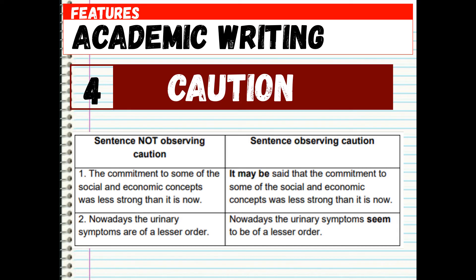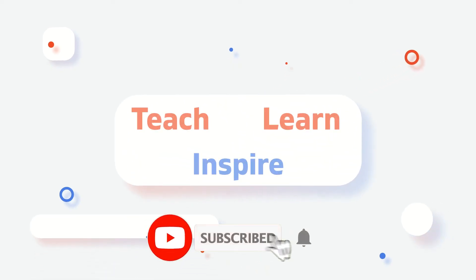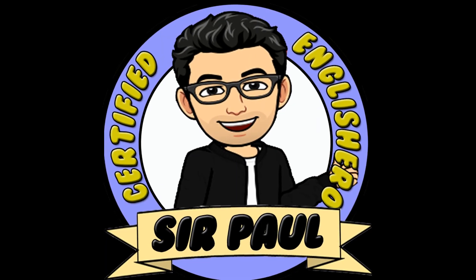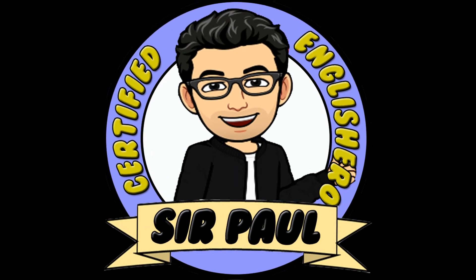Here are examples of sentences not observing caution versus those that do. Instead of writing 'The commitment to some of the social and economic concepts was less strong than it is now,' you may write 'It may be said that the commitment to some of the social and economic concepts was less strong than it is now.' Instead of writing 'Nowadays the urinary symptoms are of a lesser order,' you may write 'Nowadays the urinary symptoms seem to be of a lesser order' or 'Nowadays the urinary symptoms are less common.'